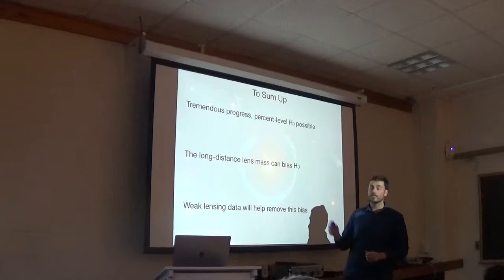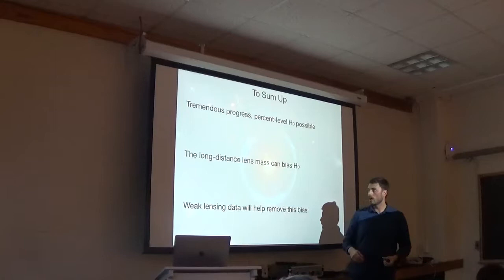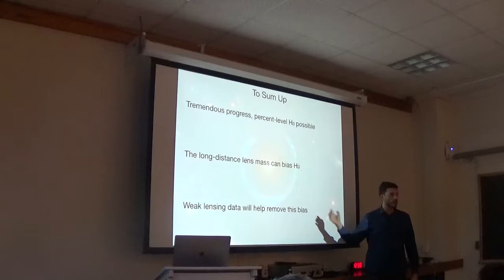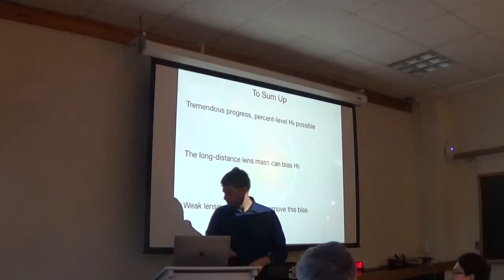So to sum up, I've told you how there's been tremendous progress in the field of measurement of H0 with strong lensing. And it seems that percent-level measurements are possible. At this point we have to worry about a lot of little biases. And I've told you about one of them arising from the long-distance lens mass. And I've told you how to use weak-lensing data to remove this bias. And hopefully studies on all this will leave us with a percent-level measurement of H0, which will tell us whether CMB is right, supernova is right, or they are both right but there's some exciting new physics. Thanks.